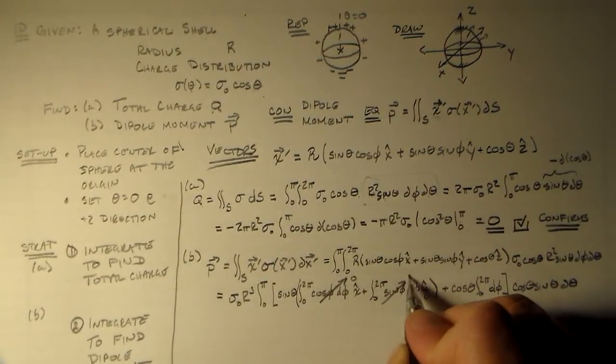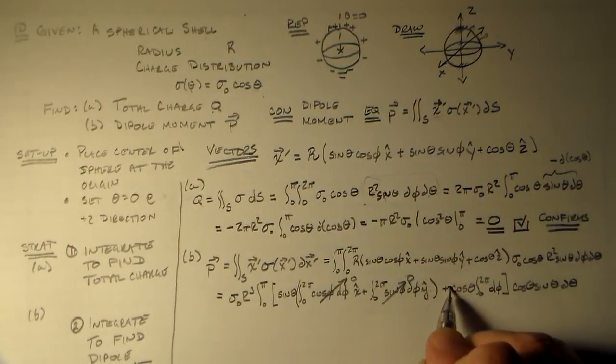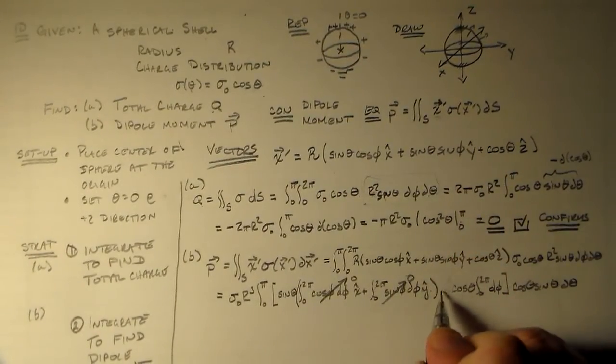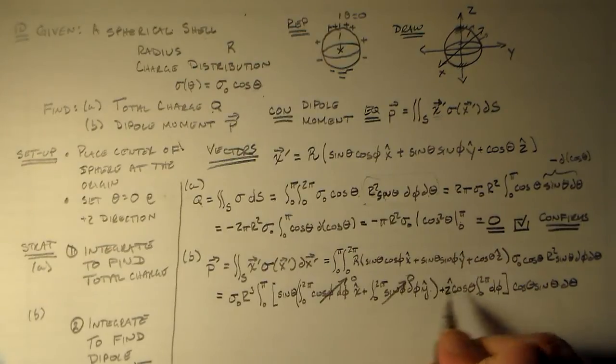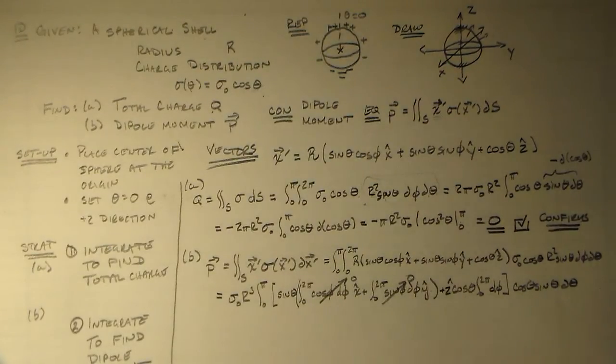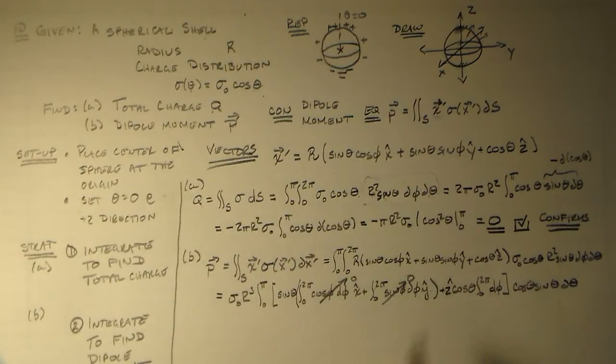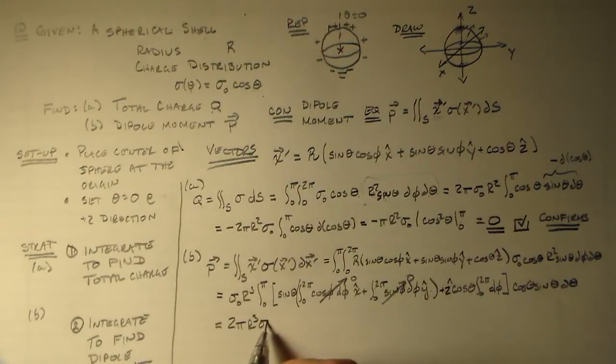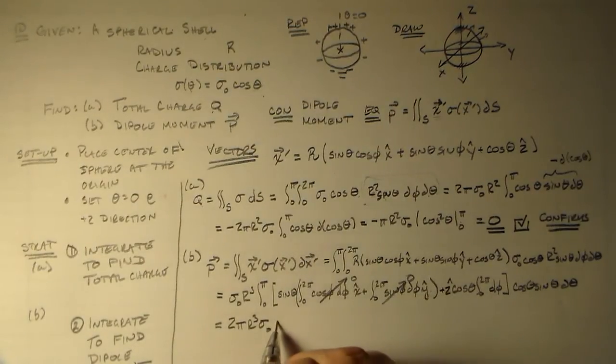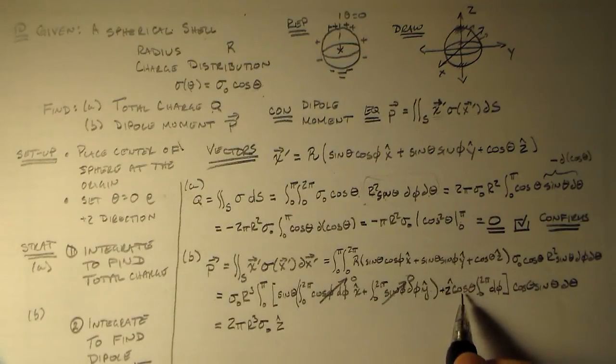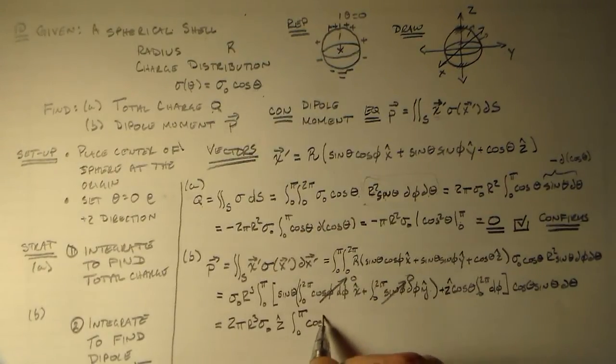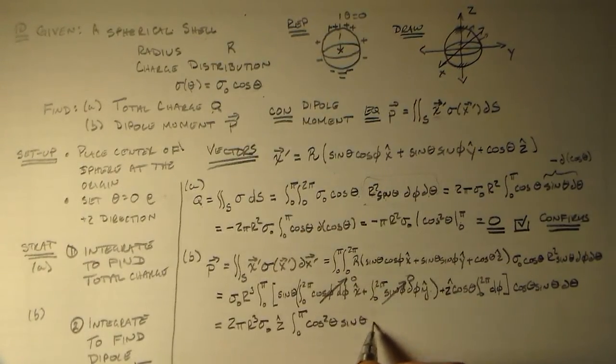Now this guy is 0 and this guy is 0, so this whole bit here is 0. We only have this z hat direction left. So the x and y components go away just like that because we're integrating over one period of a sinusoidal function. This guy, we get a 2 pi out in front. So we have this guy equal to 2 pi r cubed sigma naught in the z hat direction. And we have the integral from 0 to pi of cosine squared theta sine theta d theta.